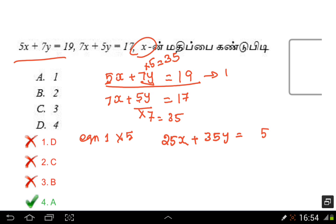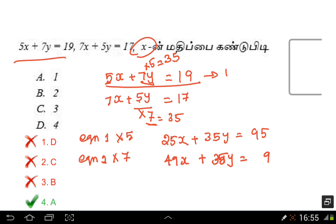After multiplying, there are terms with 35y. Then we subtract the equations. Equation 1 has 35y and there are two plus terms. We use y to cancel the x value. For example, comparing x to 49, this equals 9.